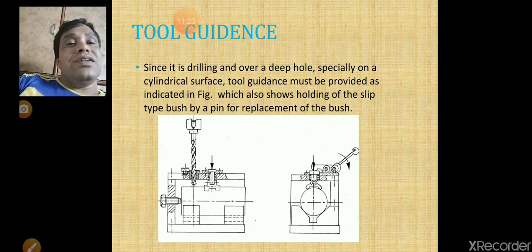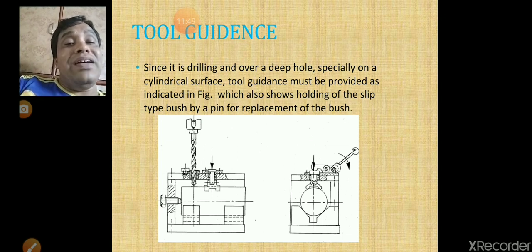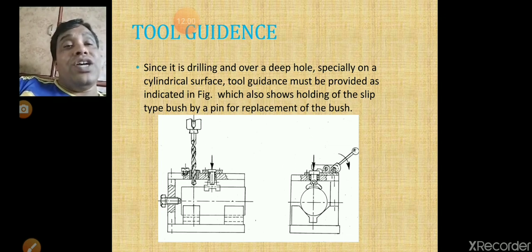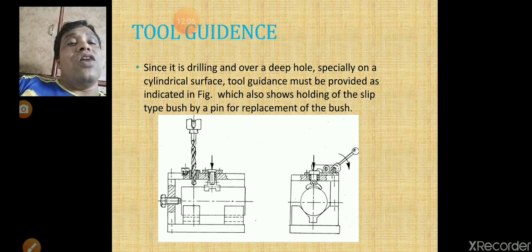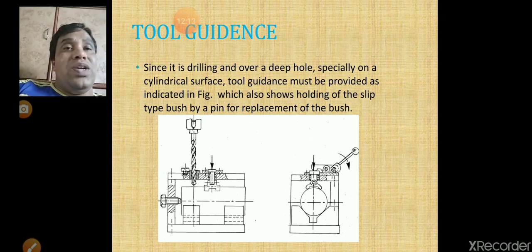The fifth step is tool guidance. Guiding of the tool is very important and is done with the help of a bush, which should be properly secured to the jig body using a nut and bolt. The jig bush guides the drill accurately. Because of runout, the hole size may be enlarged, so the bush is used to prevent this and ensure the hole is drilled accurately, improving the accuracy of the operation.